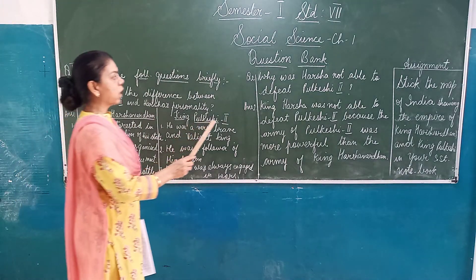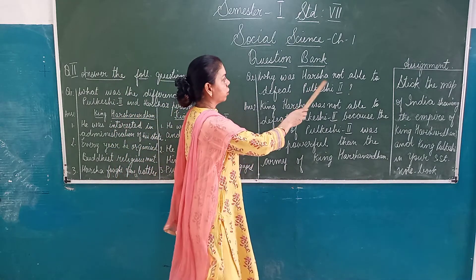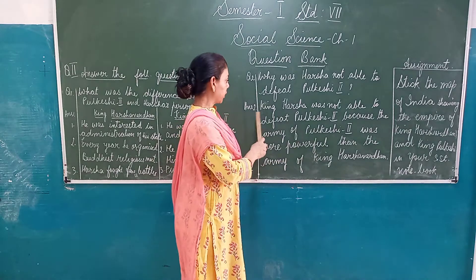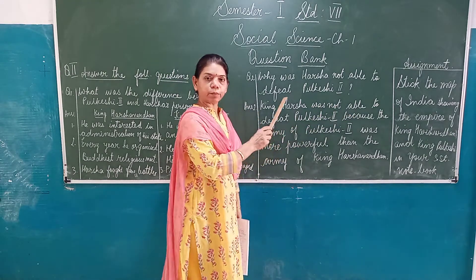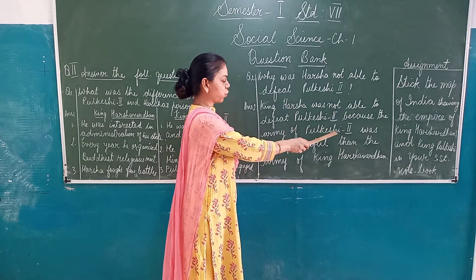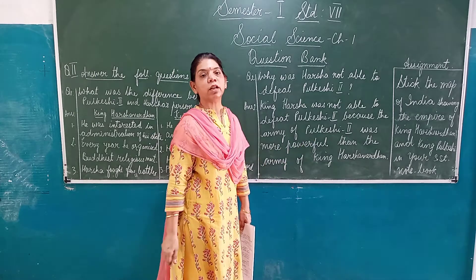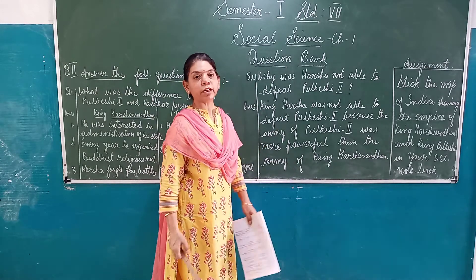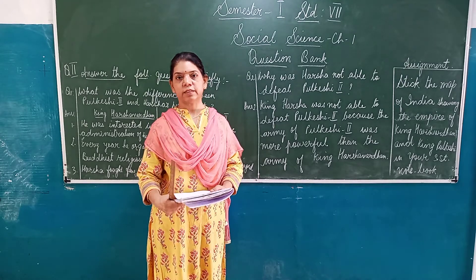Why was Harsha not able to defeat Pulakeshi 2? The answer is: King Harsha was not able to defeat Pulakeshi 2 because the army of Pulakeshi 2 was more powerful than the army of King Harsha. So he was not able to defeat Pulakeshi. We proceed with the third answer.